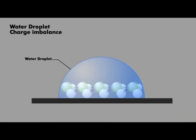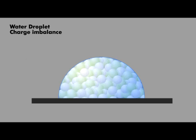Now think small for a second. What is a water droplet? It's a collection of water molecules that behave like magnets. The charge imbalances lie on the droplet surface. In fact, you can calculate the total amount of charge imbalance by measuring the surface area of the water droplet.